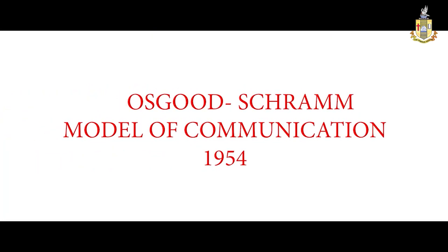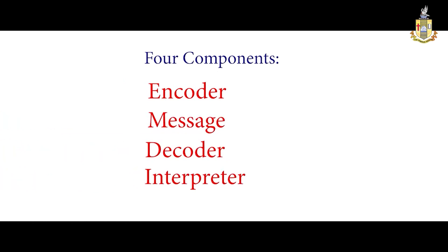Circular Model of Communication is also known as Osgood and Scrum Model of Communication. This particular model is composed of four main elements: first one, Encoder; second one, Message; third one, Decoder; and fourth one, Interpreter.